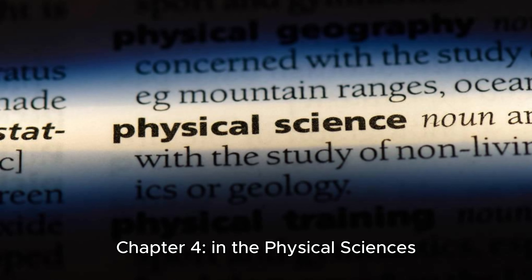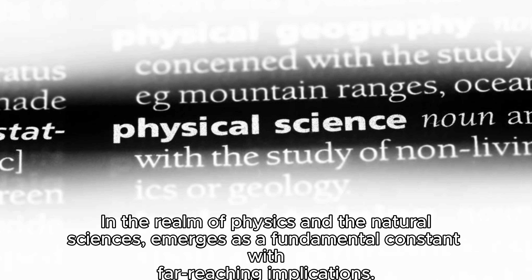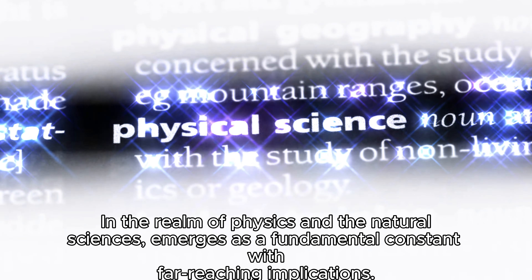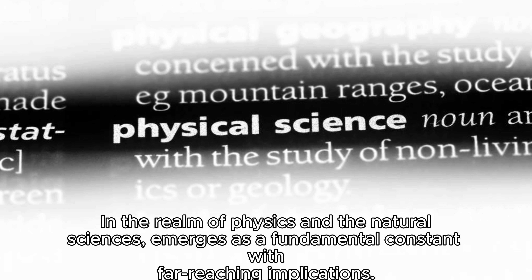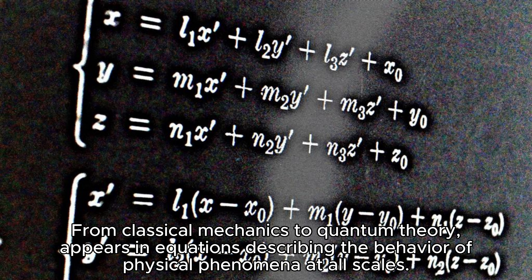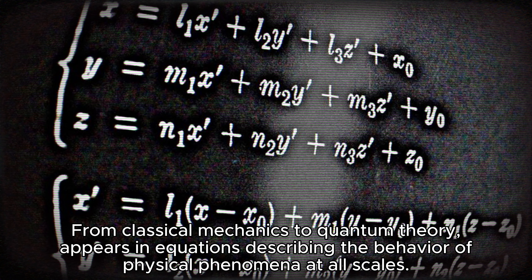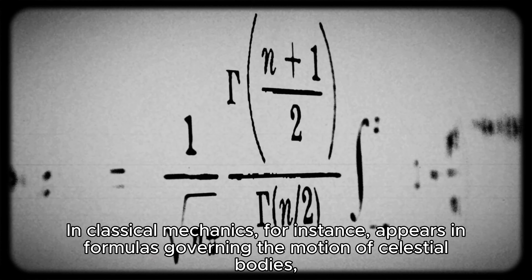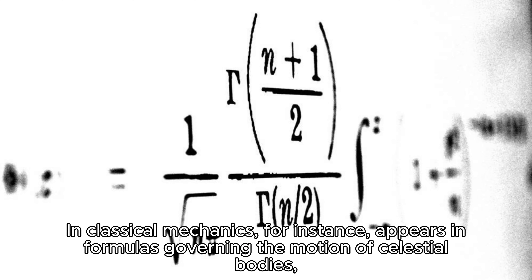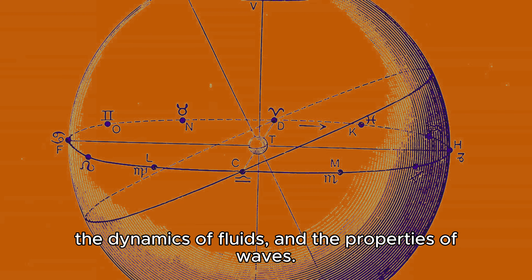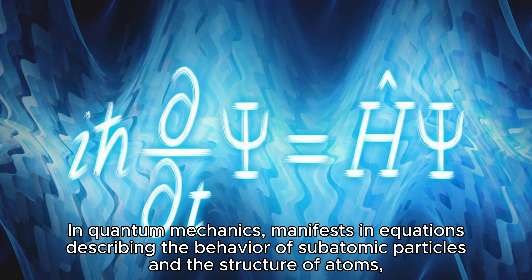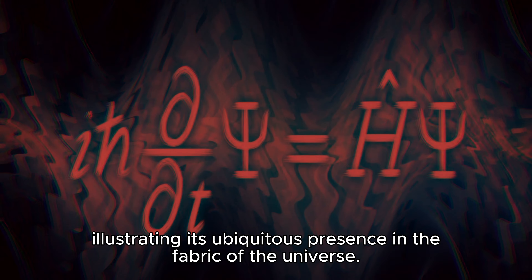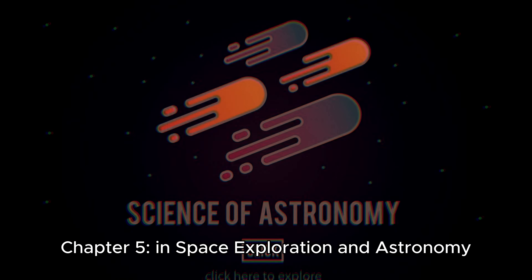Chapter Four: Pi in the Physical Sciences. In the realm of physics and the natural sciences, Pi emerges as a fundamental constant with far-reaching implications. From classical mechanics to quantum theory, Pi appears in equations describing the behavior of physical phenomena at all scales. In classical mechanics, Pi appears in formulas governing the motion of celestial bodies, the dynamics of fluids, and the properties of waves. In quantum mechanics, Pi manifests in equations describing the behavior of subatomic particles and the structure of atoms, illustrating its ubiquitous presence in the fabric of the universe.